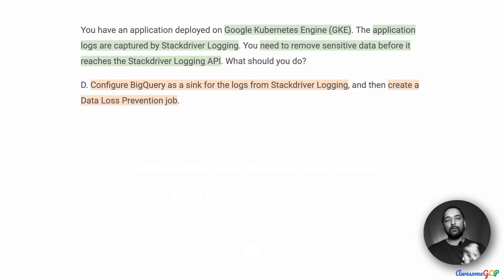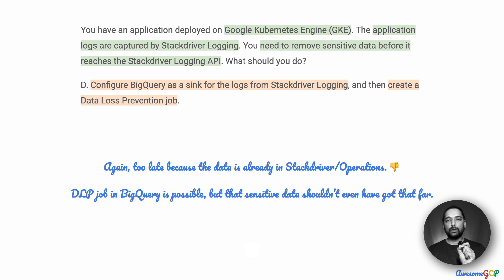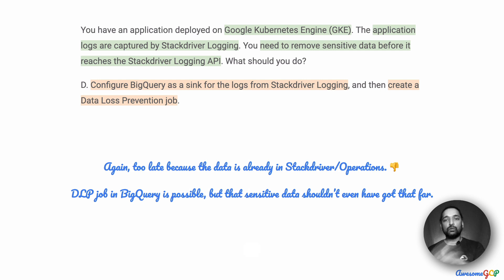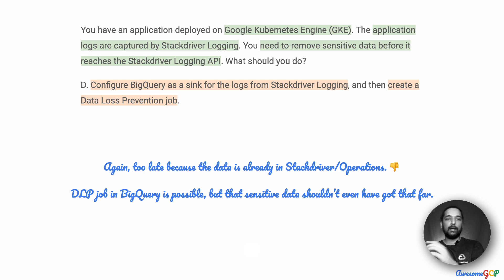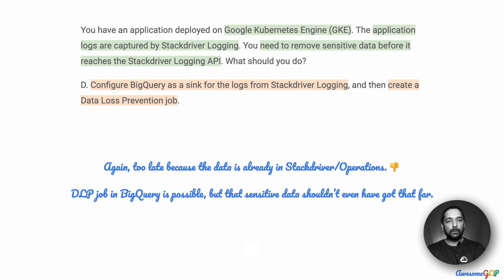Option D suggests that we configure BigQuery as a sink for the logs from Stackdriver logging and then create a data loss prevention job. The data loss prevention API can clean out sensitive data like credit card numbers or social security IDs. However, doing this in BigQuery is just too late. We've already got the data into Stackdriver logging where the operations person can see it, and then we are exporting to BigQuery and trying to remove sensitive information there — which is absolutely too late. It shouldn't have gotten into Stackdriver logging in the first place, so we eliminate option D.